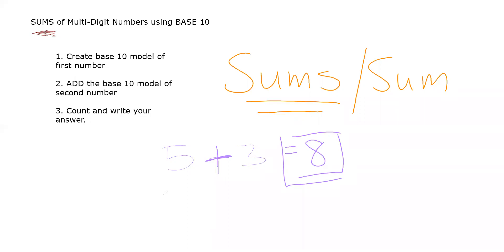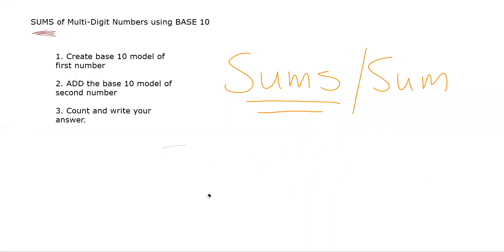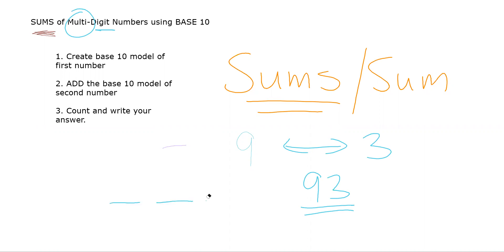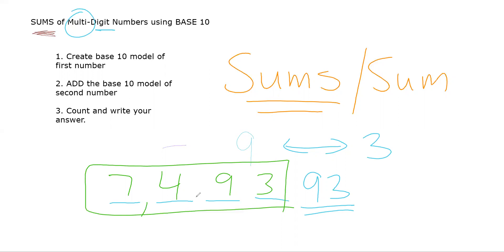Today we're going to talk about how to add multi-digit numbers — find the sums of them. Multi-digit goes back to the idea of place value. A digit is a single numeral, like nine or three. When they come together they make a multi-digit number, like 93. A four-digit number would be a number with four place values, for example 7,493.